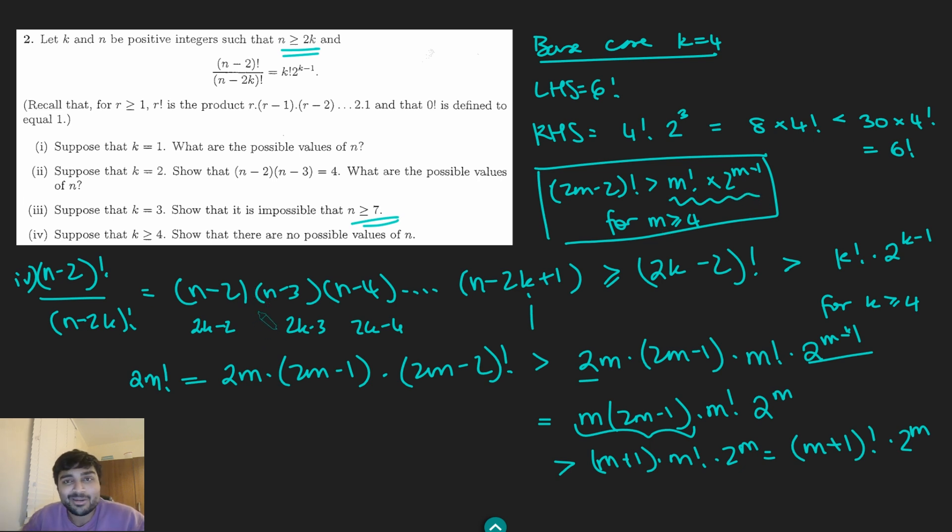And that completes our proof by induction. So that shows that this left-hand side is going to be always bigger than this right-hand side. So there's no possible way for this to have any solutions for k at least 4, because this side is always strictly bigger than the right-hand side. And that solves this problem.